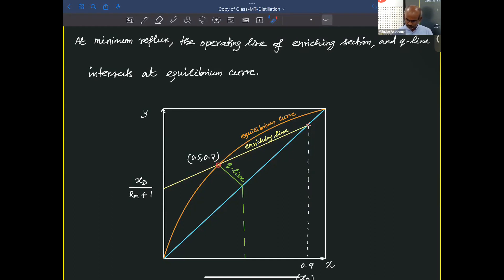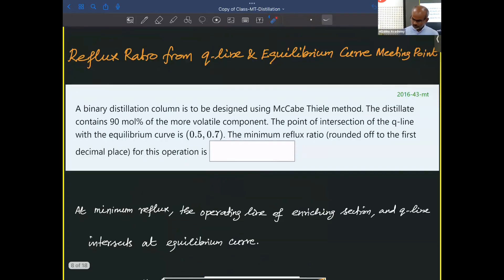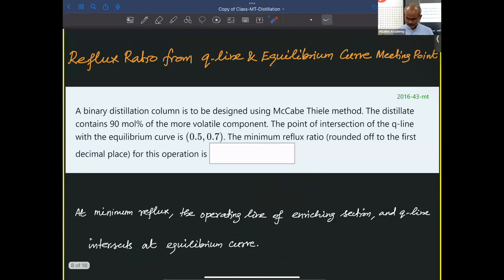Now we have two data points for the enriching line. What is one point? One point is simply (0.9, 0.9). That is the point of XD, distillate composition. The other point is this meeting point, which is given as (0.5, 0.7). We need to find the reflux ratio.